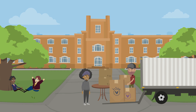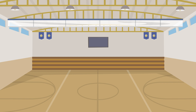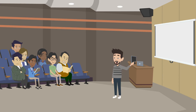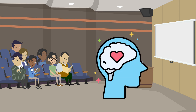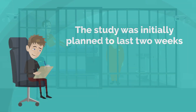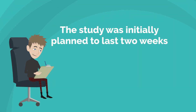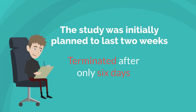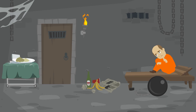Zimbardo and his team transformed the basement of a Stanford University building into a makeshift prison. They carefully selected 24 participants, all male and deemed to be emotionally stable, to play the roles of prisoners and guards. The study was initially planned to last two weeks, but had to be terminated after only six days due to the shocking turn of events that unfolded.